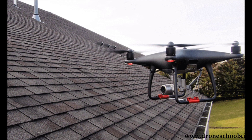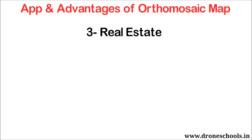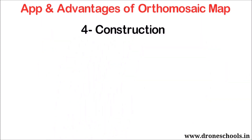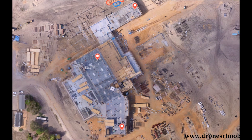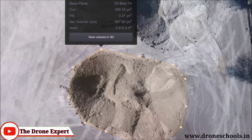The fourth application is in construction. Property owners get an updated view of their construction site on a regular basis and can leverage the accuracy of Orthomosaic for precise measurement. Similarly, it is useful in forest conservation and agricultural applications, and many more.